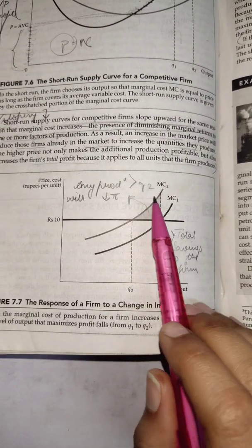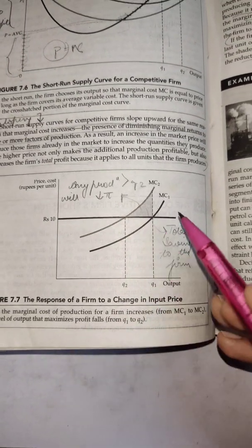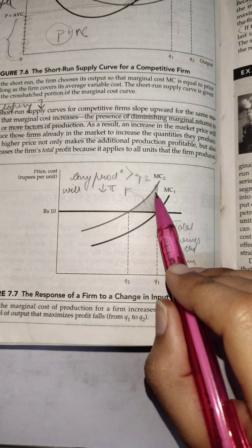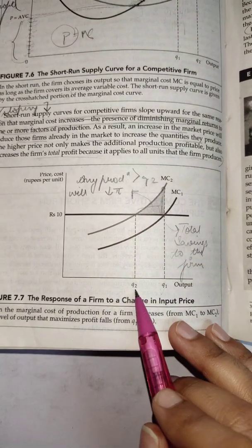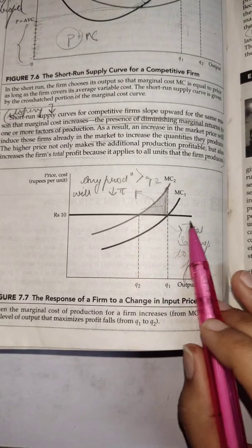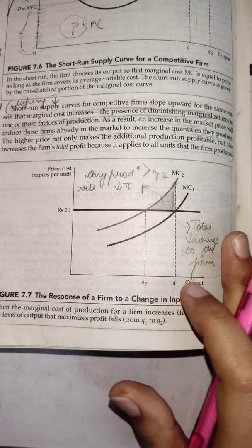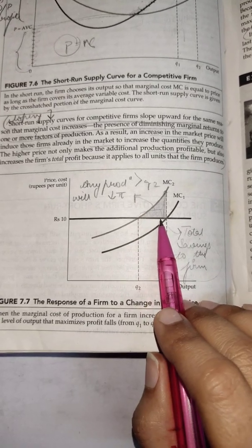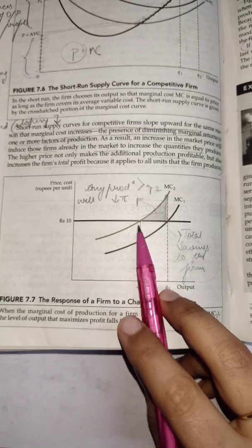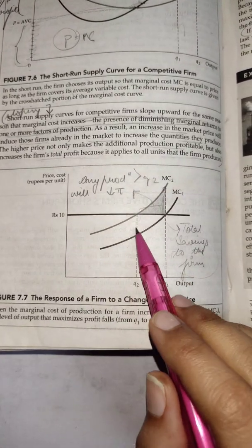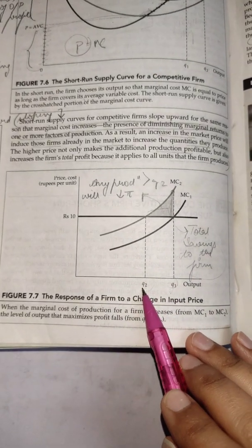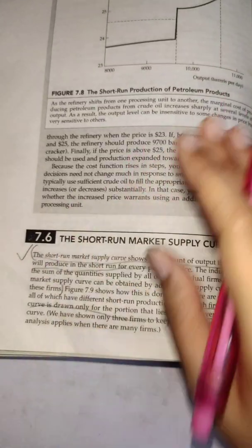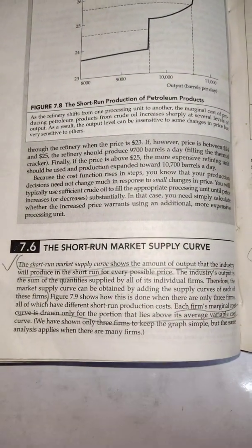If the firm continued producing at Q1 after costs increased, it would face losses because marginal cost is too high relative to price at that quantity. By reducing production and moving to Q2, the firm saves — the shaded region represents total savings. Any production beyond Q2 due to higher marginal cost would result in losses. So when input prices increase, the firm's output falls from Q1 to Q2. The next topic is the short-run market supply curve, to be covered in the next video.